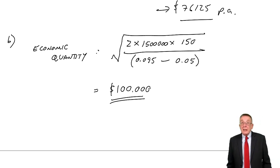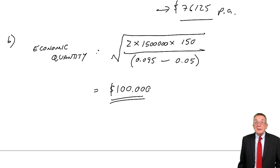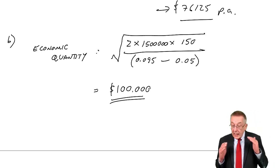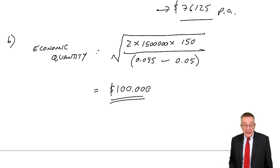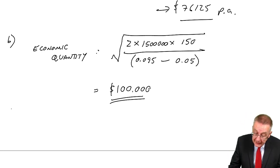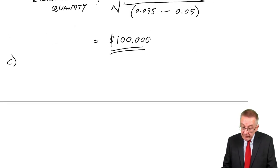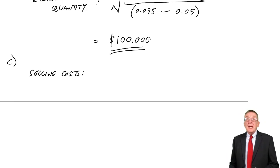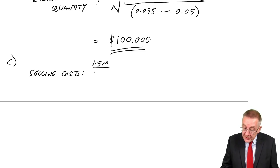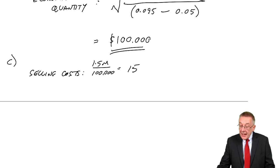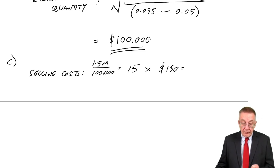We did it in part A selling 150,000 each time. The cheapest cost would be to sell 100,000 each time. Part C says at the EOQ, at the economic quantity, what is the total cost per year? Let's check it is a lower cost than what we had before. The selling costs: how many sales do we need to make? It's 1.5 million in total. We're selling 100,000 each time, so there'll be 15 sales. Each time it costs us 150, so over a year, $2,250.